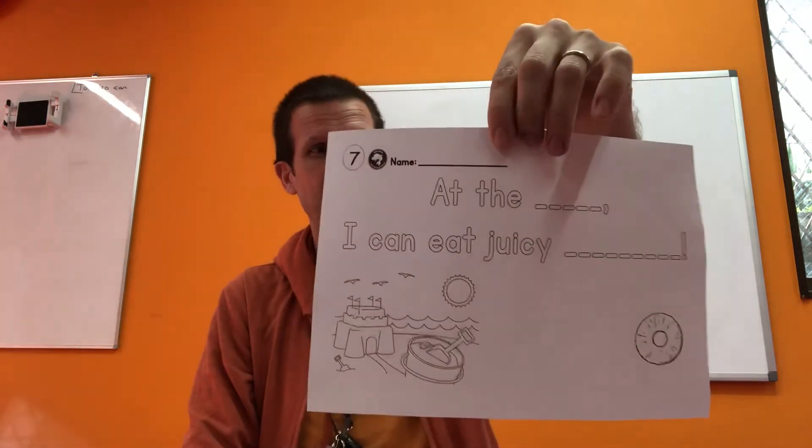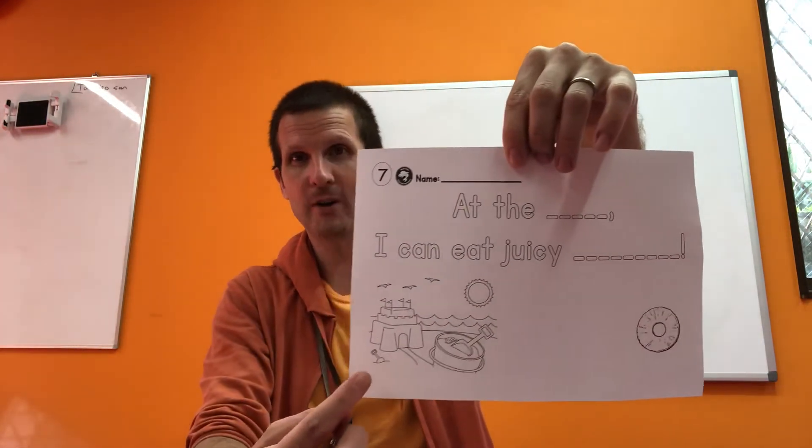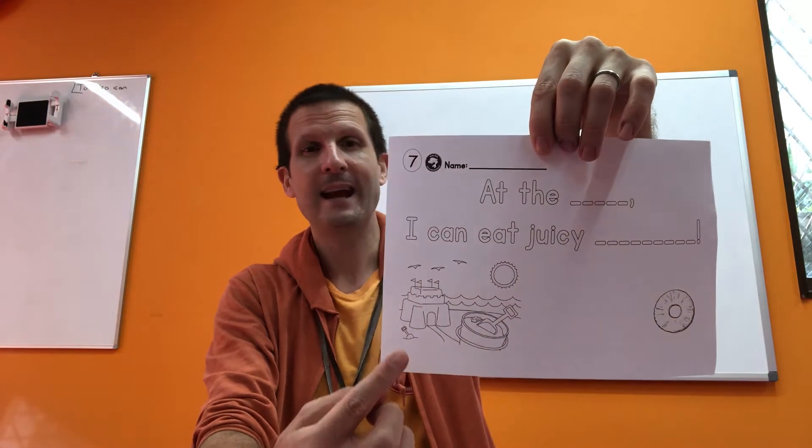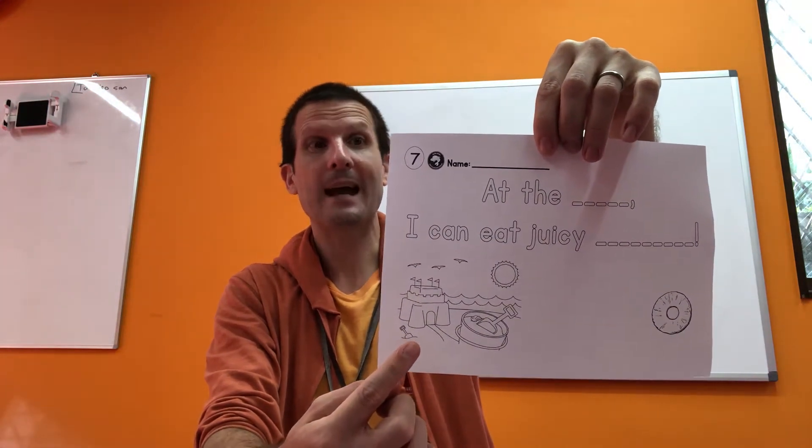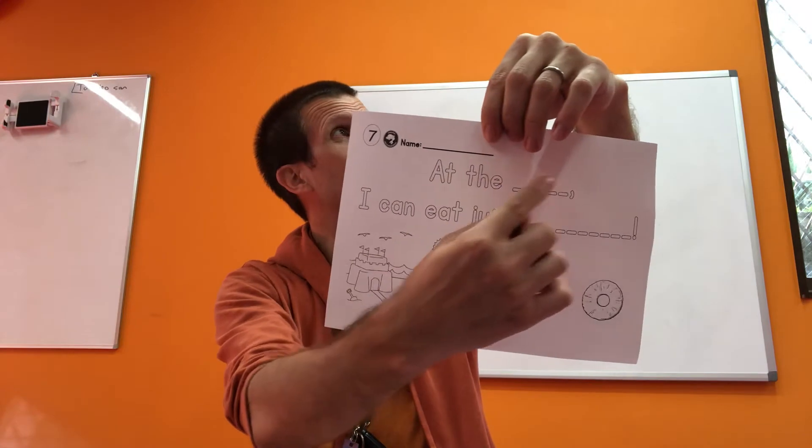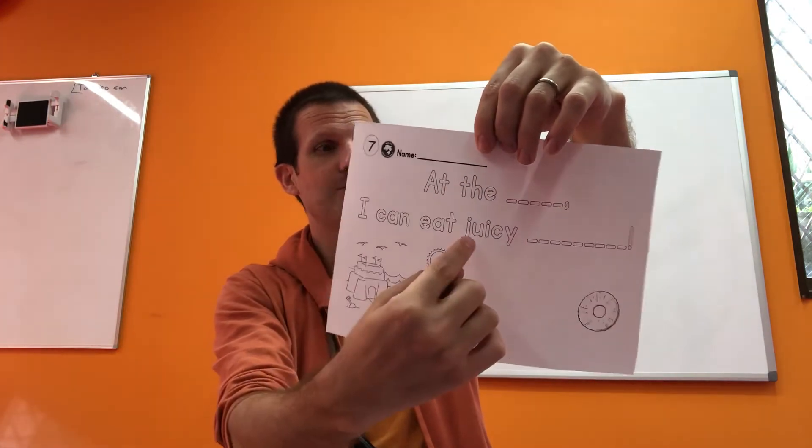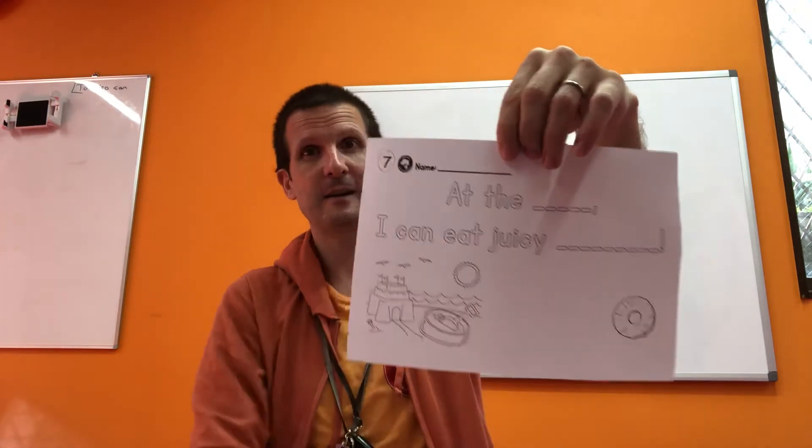Oh, number seven. Uh-oh. Where is this? At the park? No. At the... At the beach. At the beach, I can eat juicy... What is this? Pine. Right? One of our compound words again, right? Pineapple. Pineapple.